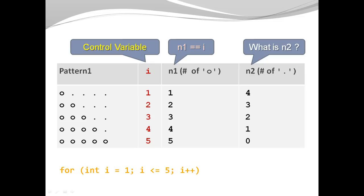In my second row, i is 2, and n2 is 3. 2 plus 3 is 5, etc.